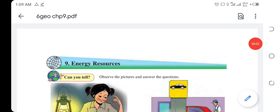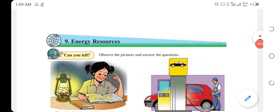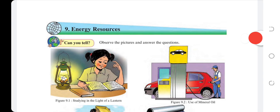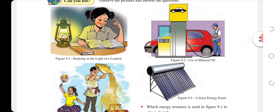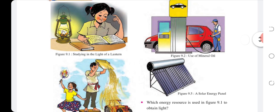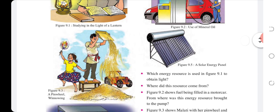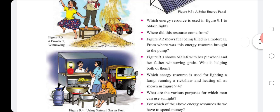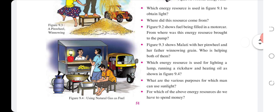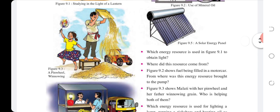Chapter 9: Energy Resources. Observe the picture and answer the question. Figure 9.1 shows studying the light of a lantern. Figure 9.2 shows use of mineral oil. Figure 9.3 shows a pinwheel winnowing. Figure 9.4 shows using natural gas as fuel. Figure 9.5 shows a solar energy panel.